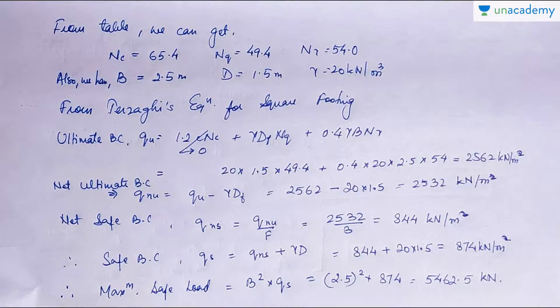Now we need to find the safe bearing capacity. Net safe bearing capacity is found by dividing the net ultimate by factor of safety 3. Dividing by 3, we get net safe bearing capacity equal to 844 kN/m².